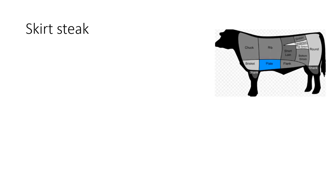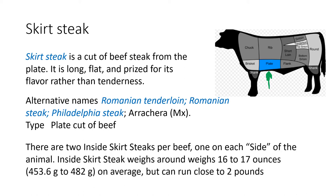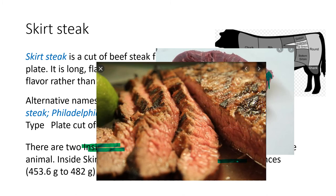Skirt steak comes from the plate. It is a long flat cut prized more for flavor than tenderness, since it comes from an exercise part of the animal. It is typically used for fajitas. There is also an inside skirt steak, which is an inner portion. The skirt steak weighs similarly about 16 to 17 ounces.